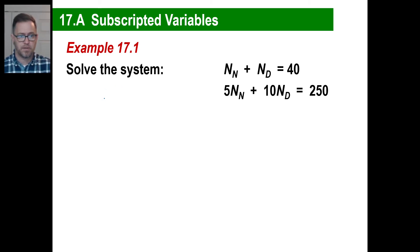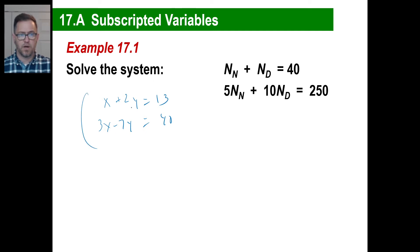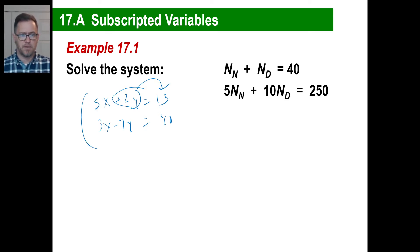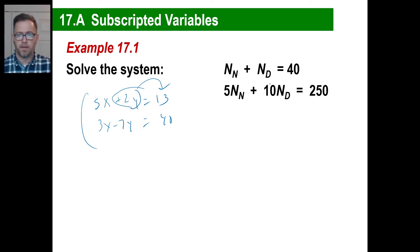You can treat these just like any other system you've ever done. Remember how we used to do these? We'd go: x plus 2y equals 13, and then 3x minus 7y equals 40 or whatever. You would look at this and go, I'm going to use substitution, or maybe elimination by multiplying through. Don't let this fool you — n sub n is one variable, n sub d is another. This is the same as that variable, that's the same as that one.